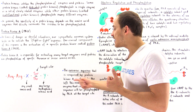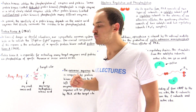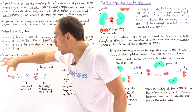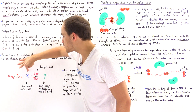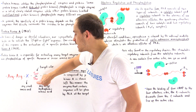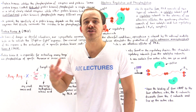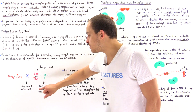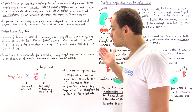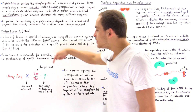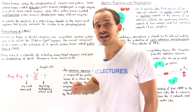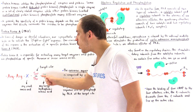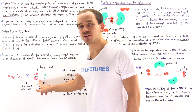The sequence known as the consensus sequence is shown on the board. Basically, if the substrate molecule contains arginine, arginine, X, serine or threonine, and Y — where X is any small amino acid such as glycine, and Y is any large hydrophobic amino acid — this is where the protein kinase will bind, and it will phosphorylate the target site, which is the serine or threonine.